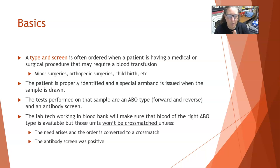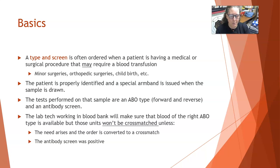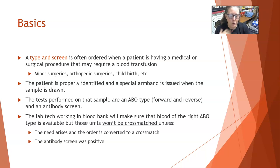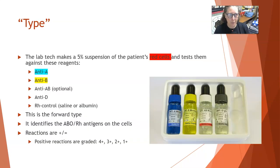The lab tech working in blood bank will make sure that blood of the right ABO type is available, but those units will not be crossmatched unless the need arises — either the order is converted to a crossmatch, or the antibody screen was positive. If the patient has a rare blood type, such as B negative or AB negative, we have to make sure those units are in-house so that if a transfusion is needed during surgery, we have blood ready to quickly crossmatch.